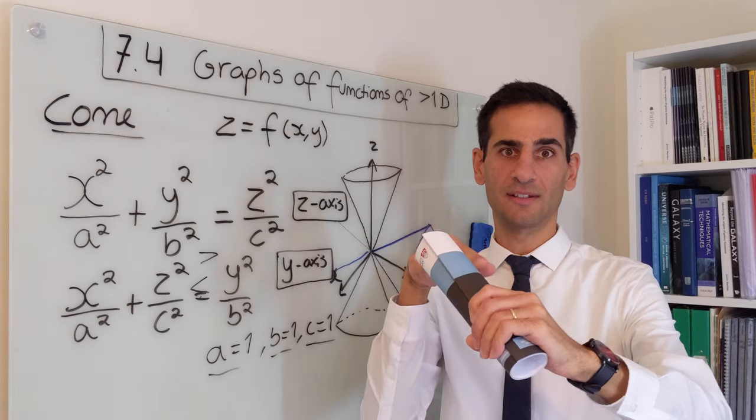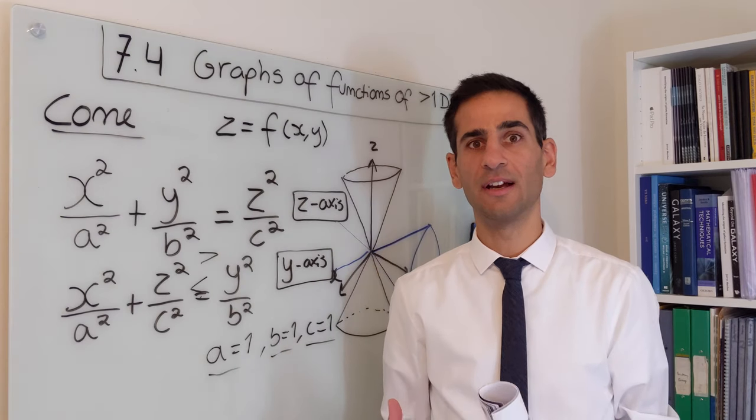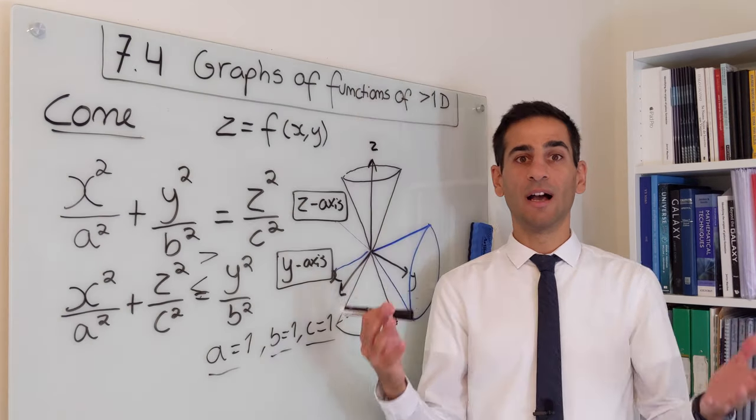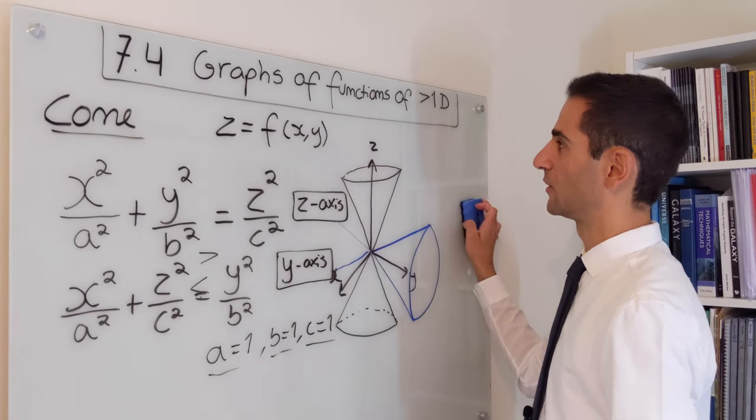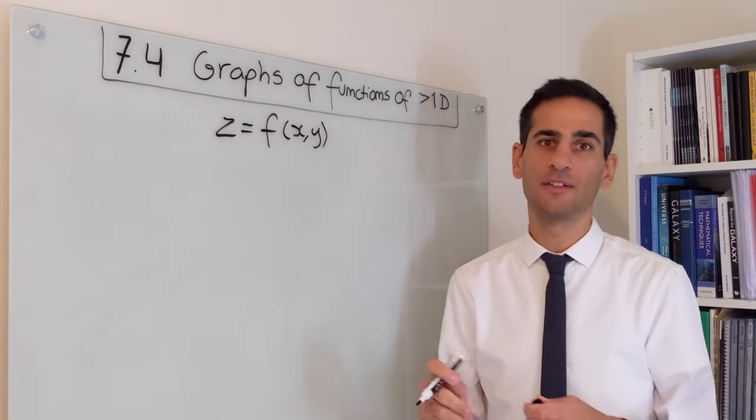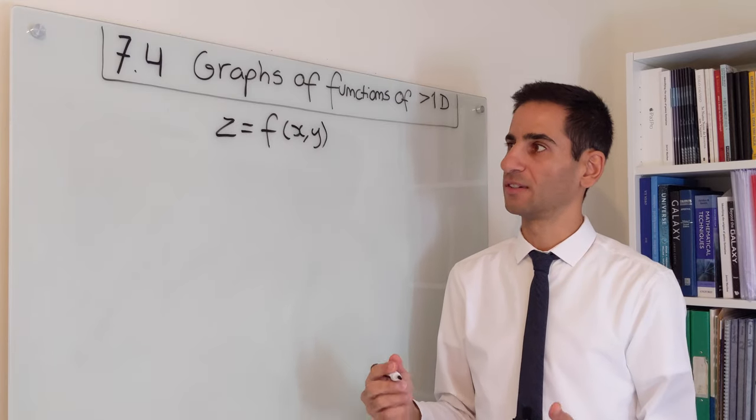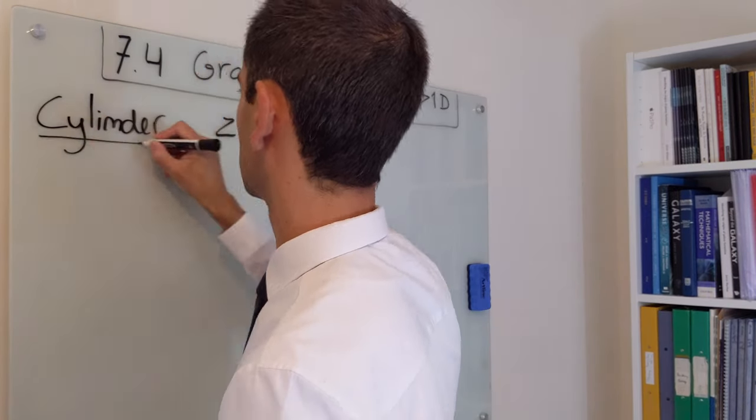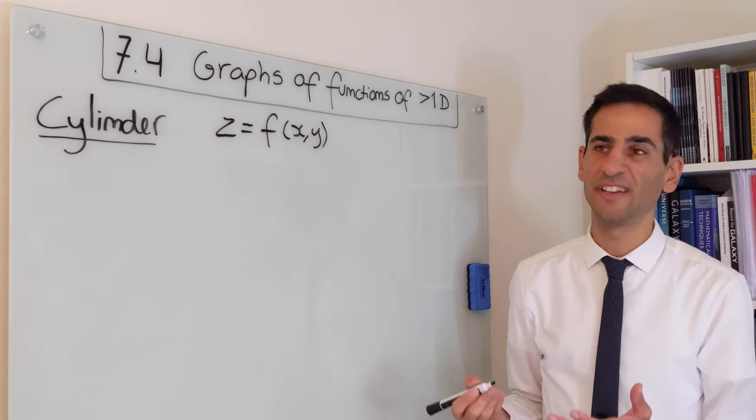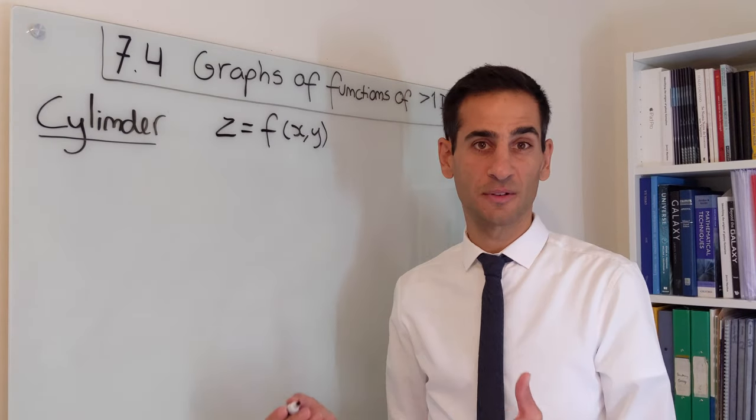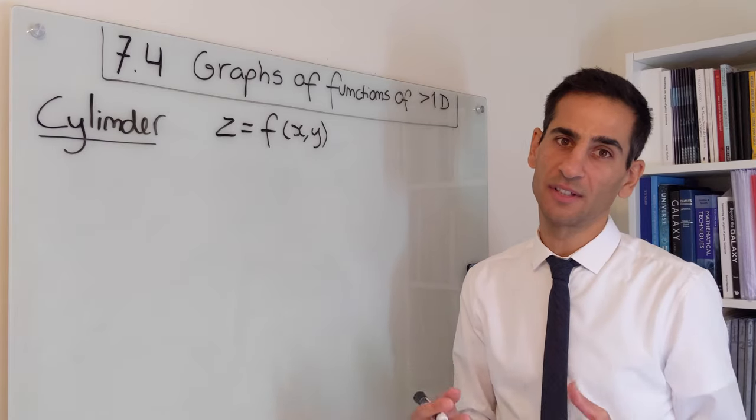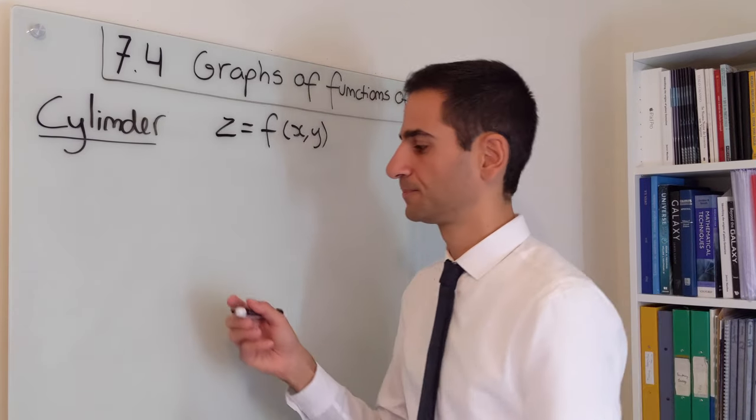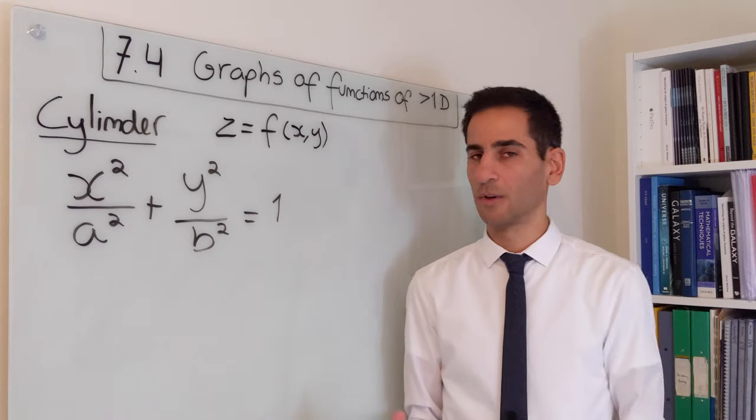It matters the direction that we take along the cylinder, so we should definitely have a simple equation to describe it. First of all, we get rid of this and we don't need cones anymore. We want to have a look at an equation that describes a cylinder. Turns out that this is very easy - the equation that describes a cylinder in three dimensions is actually the equation that describes an ellipse.